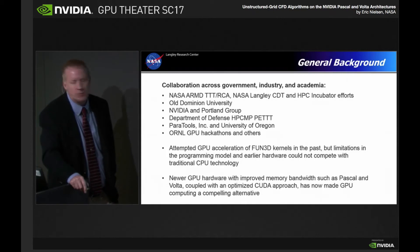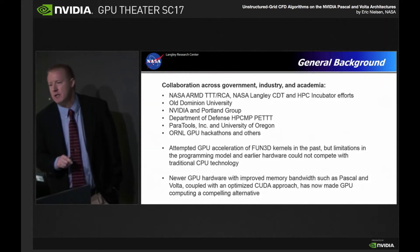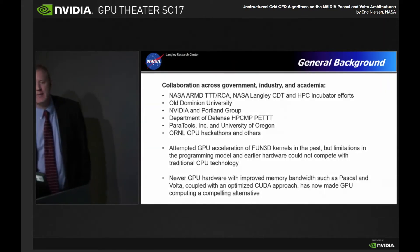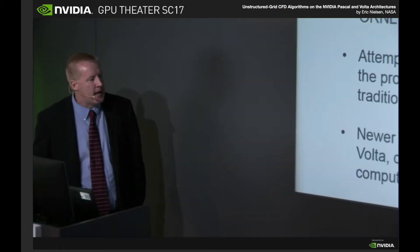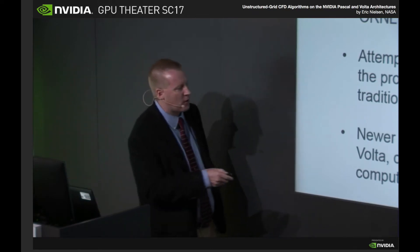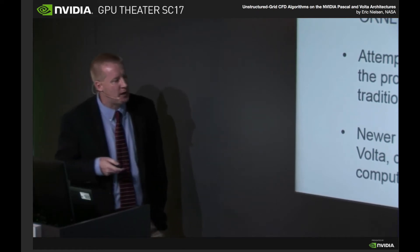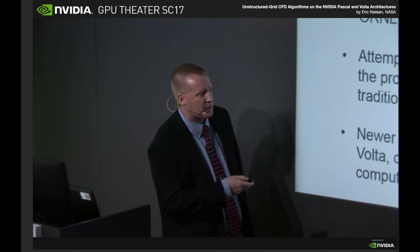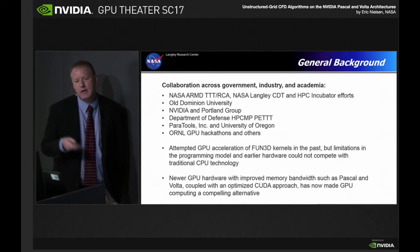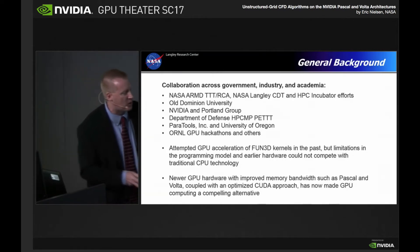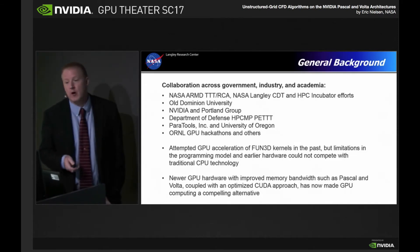We have a bit of a storied history with trying to do GPU acceleration of our kernels. In the past, we've had limitations in the programming model and some of the earlier hardware that just couldn't seem to compete with traditional CPU technology. So we've been at this for six, seven, eight years. But just in the last six months, we feel like we may have turned the corner. That's the result of a couple of different new approaches. Some of the newer hardware that NVIDIA is putting out — Pascal and Volta — really seem to provide a lot more capability, certainly in terms of memory bandwidth. We've now gone straight CUDA for our programming model, and there are a lot of advantages we can leverage at a very low level in the implementation. We're now seeing a very compelling alternative to traditional CPU-based computing for our CFD needs at NASA.